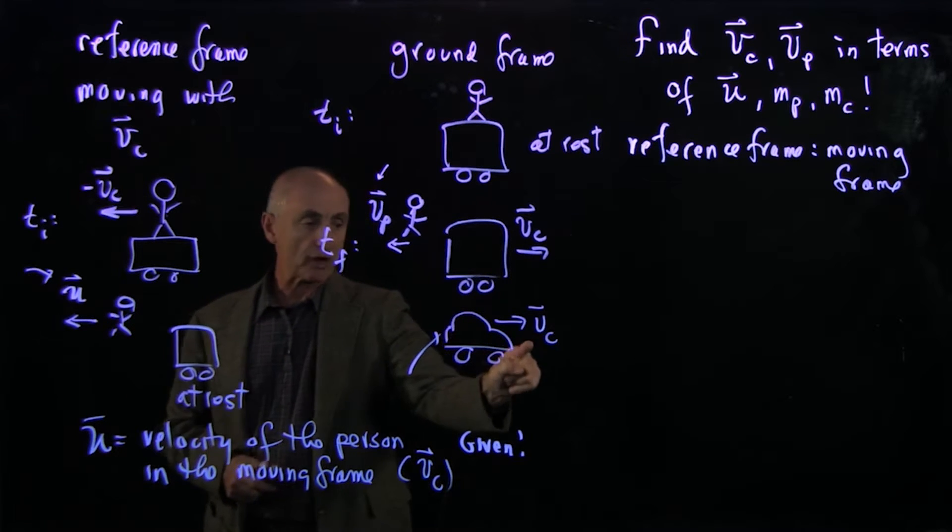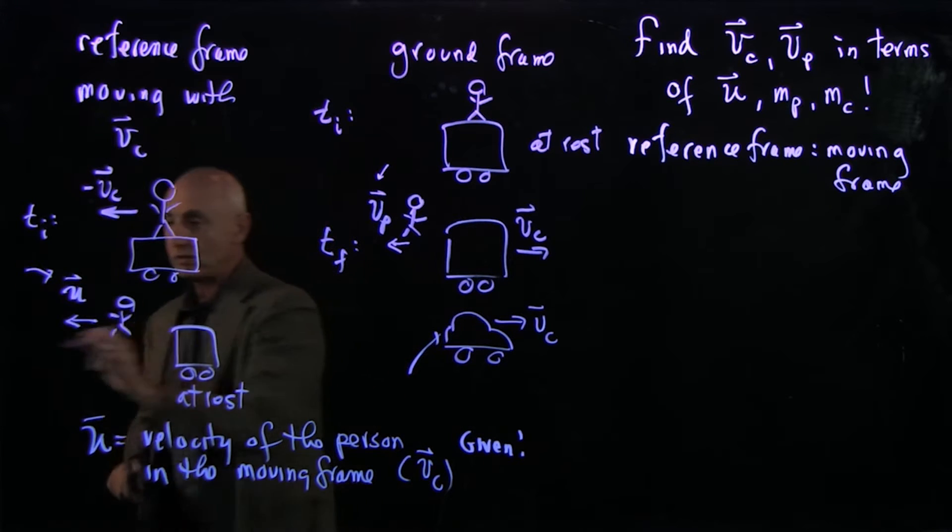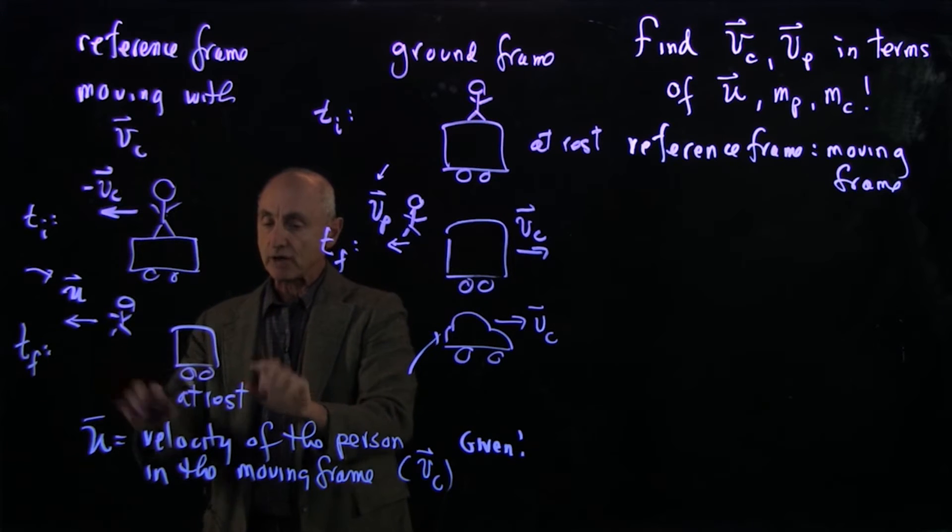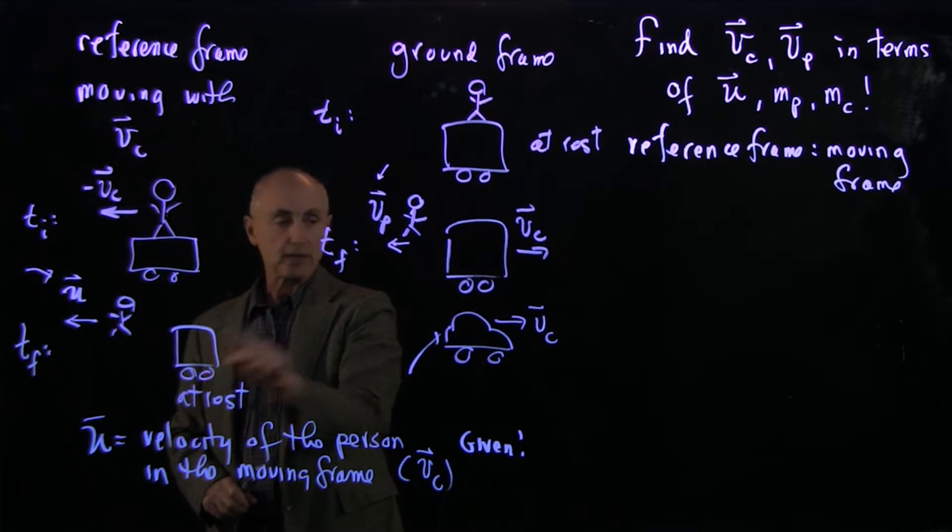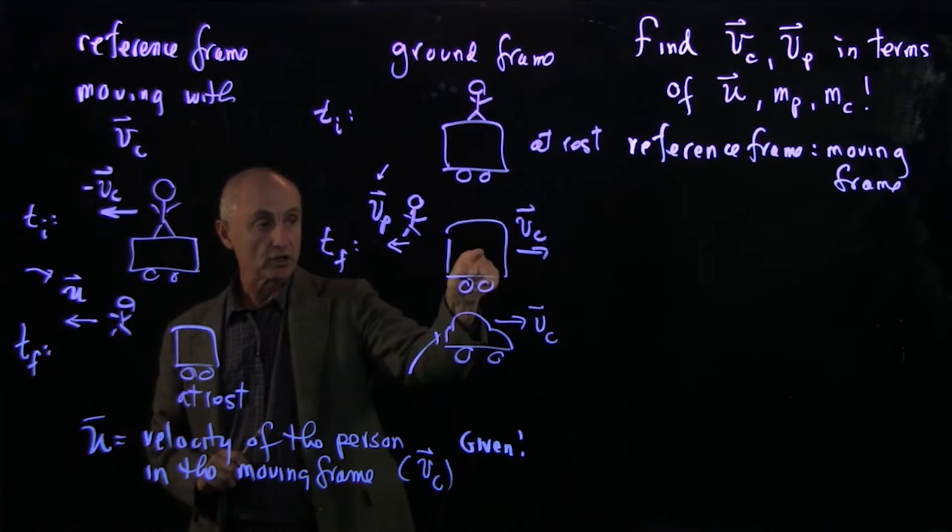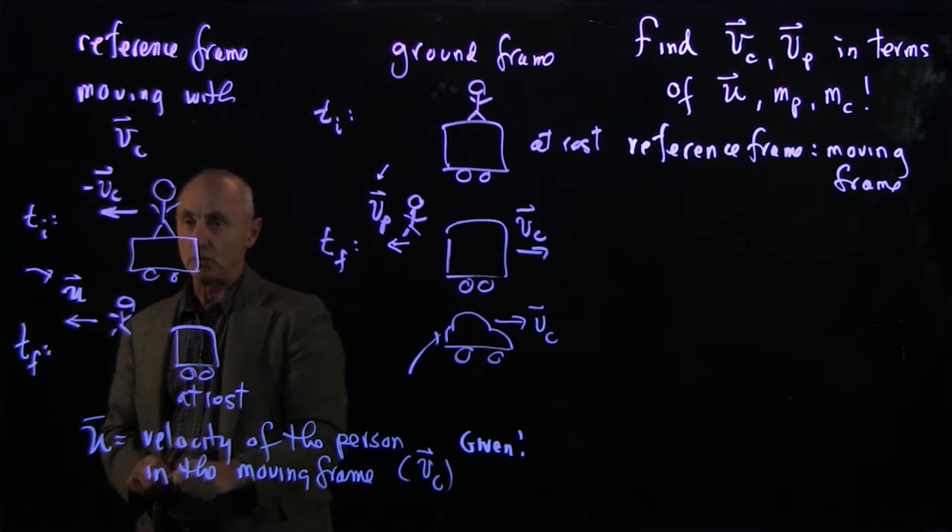Because the moving frame is traveling with the final speed of the cart, at the final interaction, after the interaction is done, in this moving frame, the cart is at rest. They're moving together. You're sitting in the cart. You're moving at the same speed. The person jumped off with speed u relative to the cart.